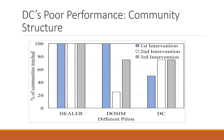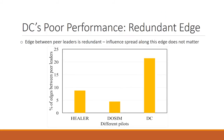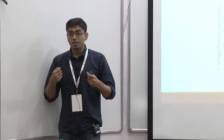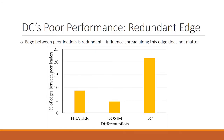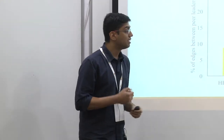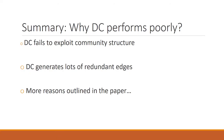This intuition is verified by the figure showing that Healer and Dosim diversify their efforts across all communities, whereas degree centrality completely ignores several communities. There is yet another reason: when you pick peer leaders, there will be some edges going across those peer leaders that are redundant from an influence maximization standpoint — influence spread along these edges does not matter since both endpoints are already influenced. Data from the pilot studies showed that degree centrality created 21% of edges as redundant — one-fifth of the social network edges no longer useful — whereas Healer and Dosim created less than half this number. To summarize, degree centrality fails to exploit community structure and generates lots of redundant edges.